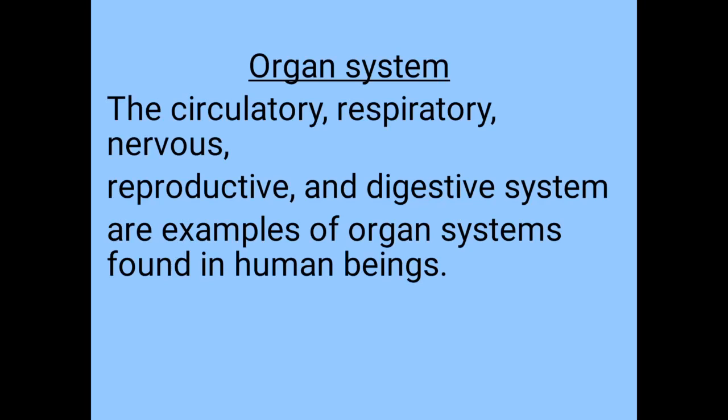Examples of organ systems found in human beings are the circulatory system, the respiratory system, the nervous system, the reproductive system, and the digestive system.